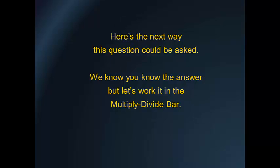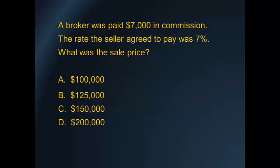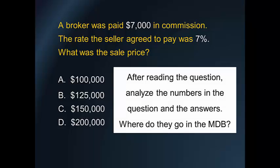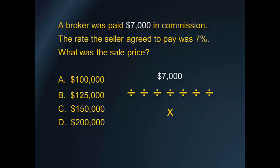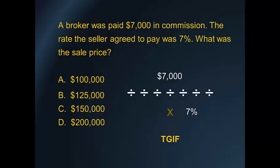Here's the next way this question could be asked. A broker was paid $7,000 in commission. The rate the seller agreed to pay was 7%. What was the sale price? After reading the question, analyze the numbers and determine where they go in the multiply-divide bar. The $7,000 is the little number, so it goes at the top. The 7% is the rate, so it goes in the bottom right. If you have the part, it is always touched into your calculator first, and your math function is division. $7,000 divided by 7% equals a $100,000 sale price.